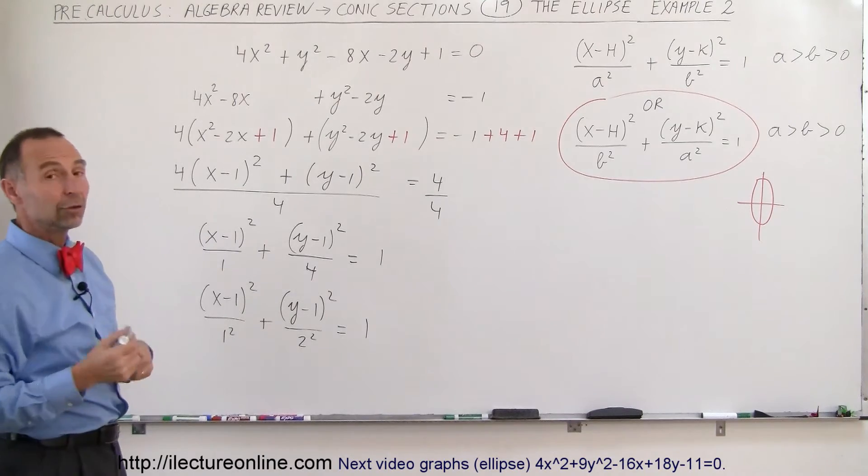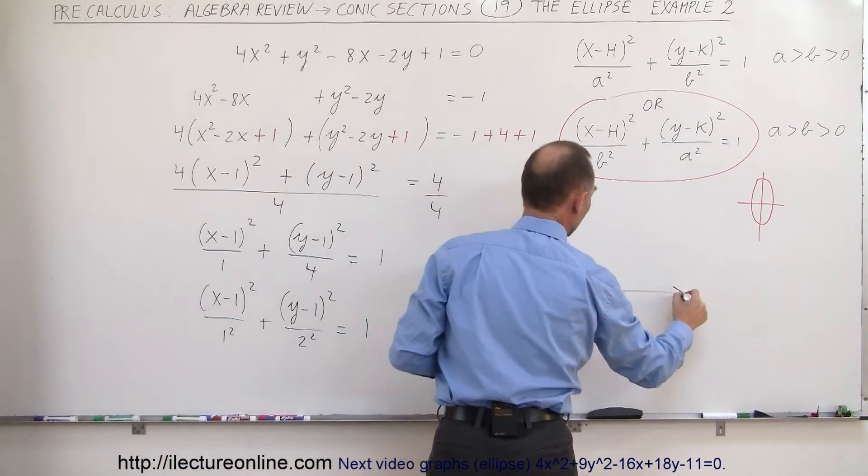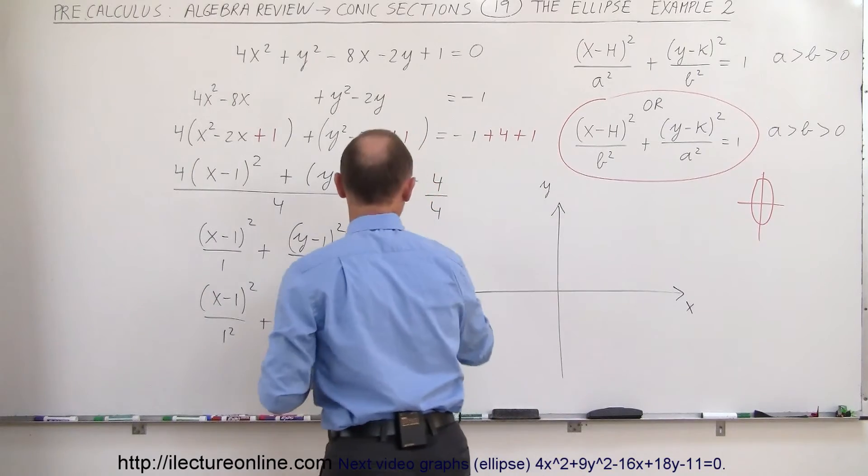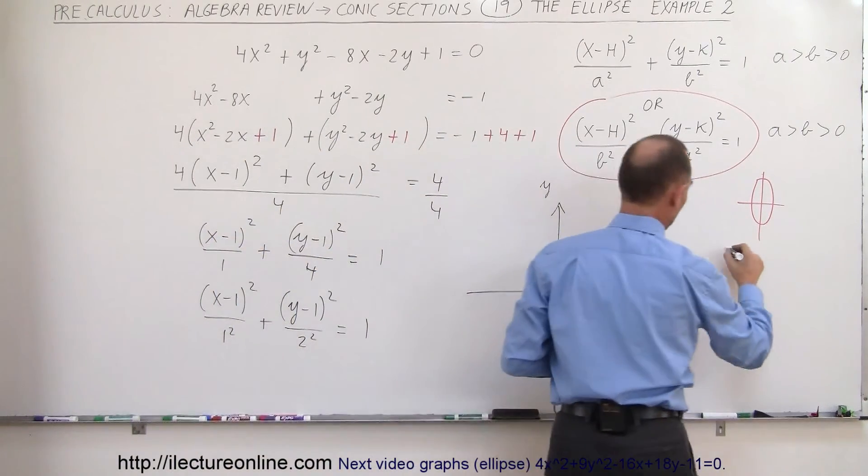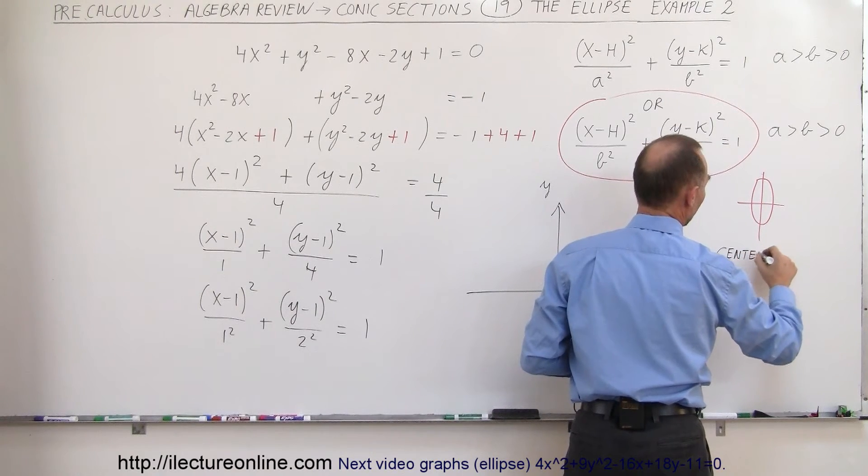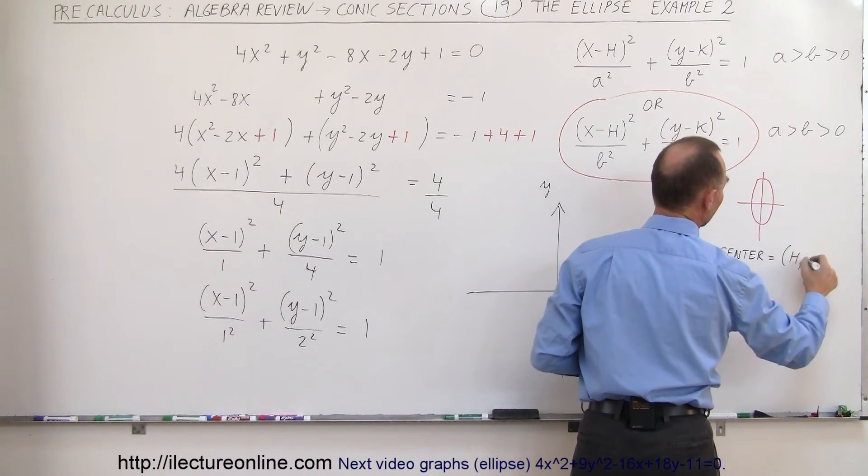Now let's go ahead and graph the ellipse. Here's my y-axis, there's my x-axis, and first I'm going to find the center of the ellipse. The center of the ellipse, of course, is equal to h, k.